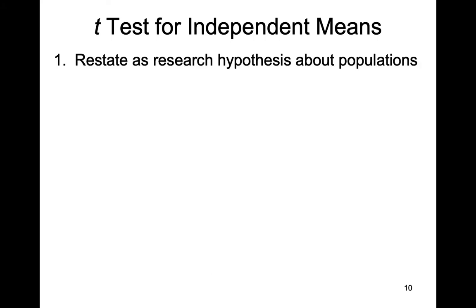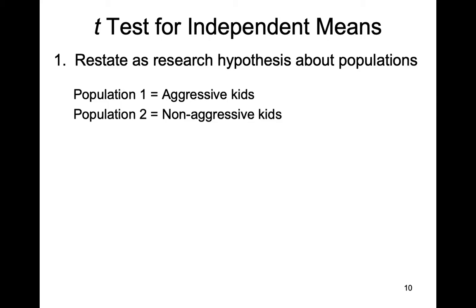Let's go through our steps of hypothesis testing. Step one: restate our question as a research hypothesis about populations. Population one will be aggressive kids and population two will be non-aggressive kids. This is somewhat arbitrary, but we follow the convention that the population of interest — similar to a treated population — is population one. We need to pay attention to who is one and who is two for the purposes of stating our predictions correctly.